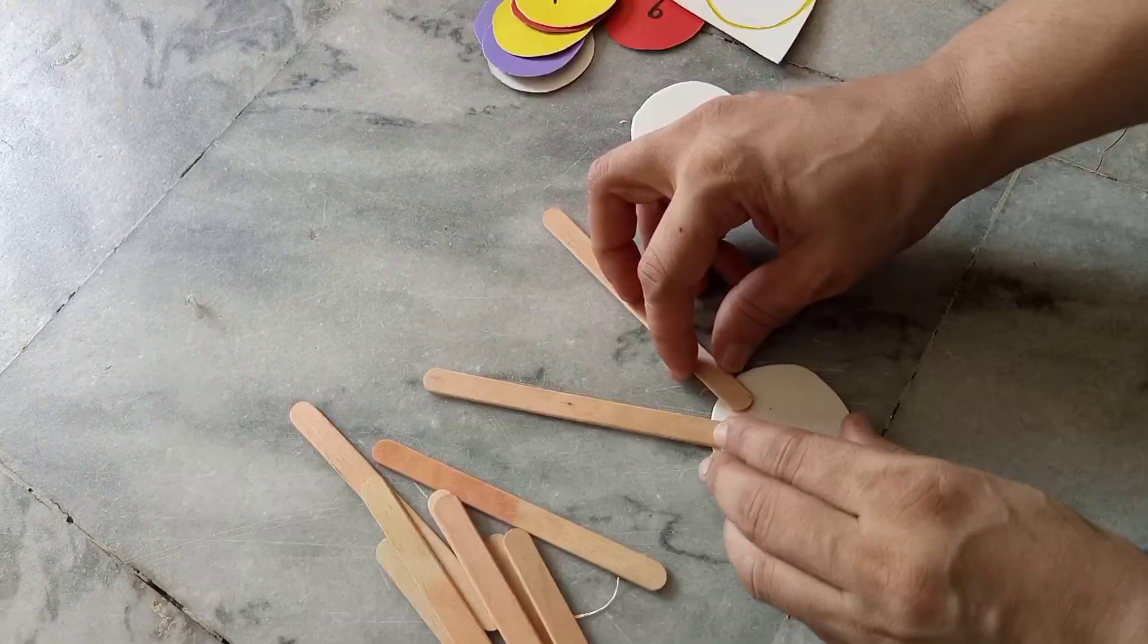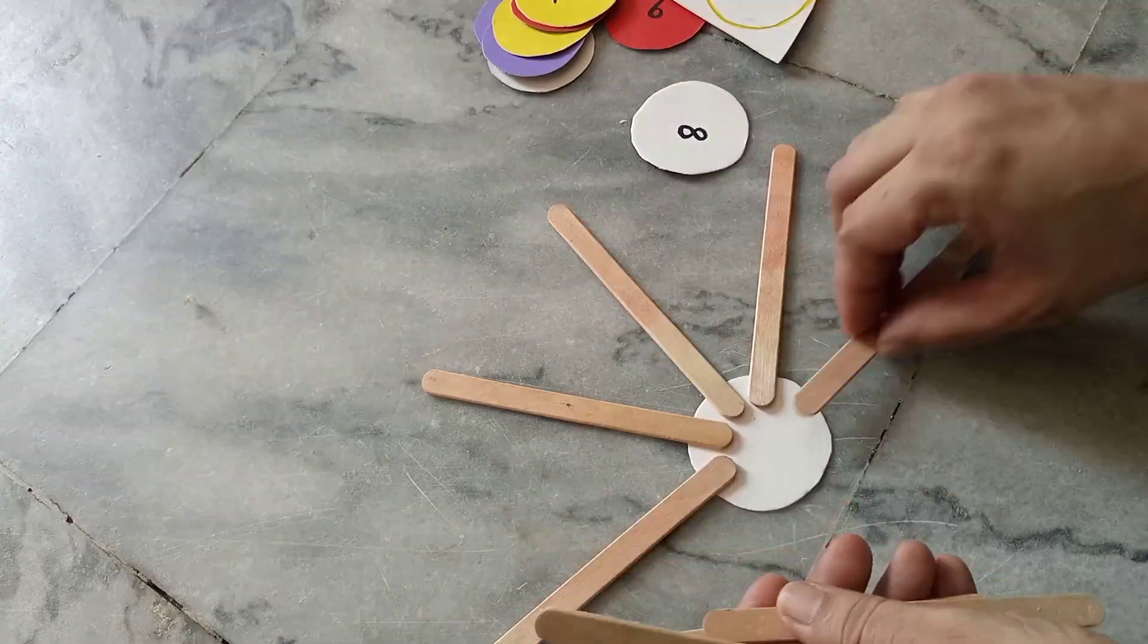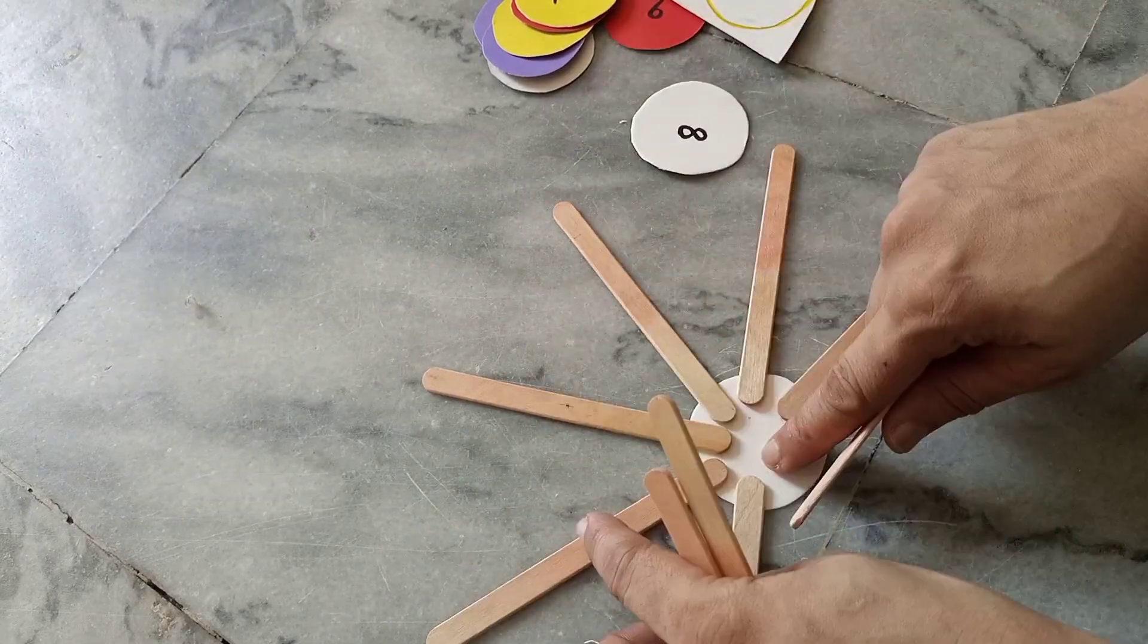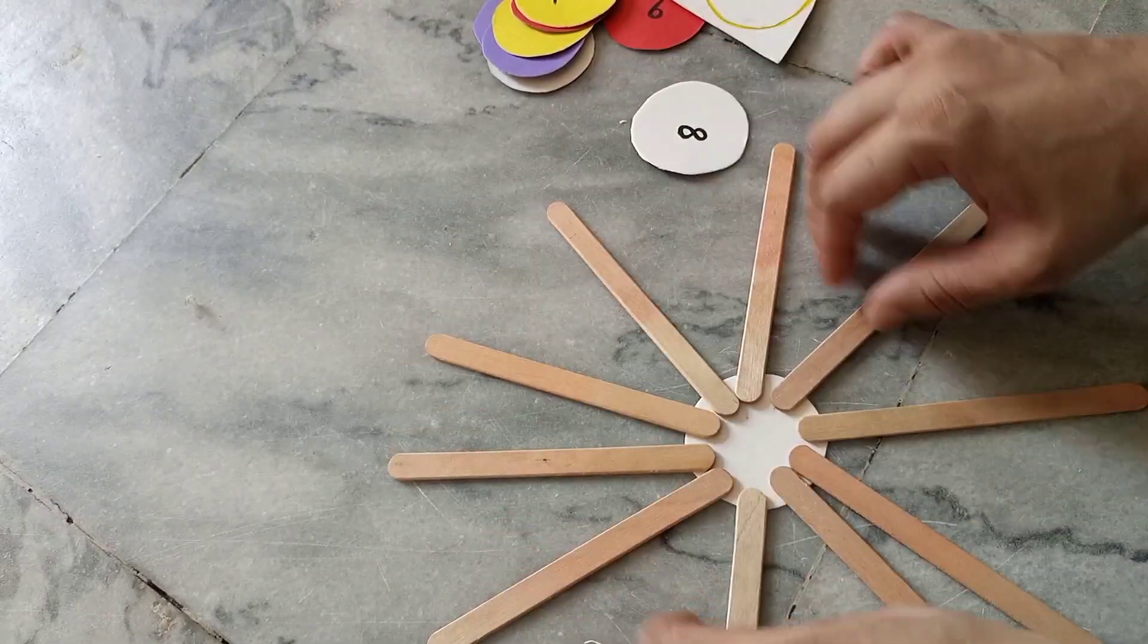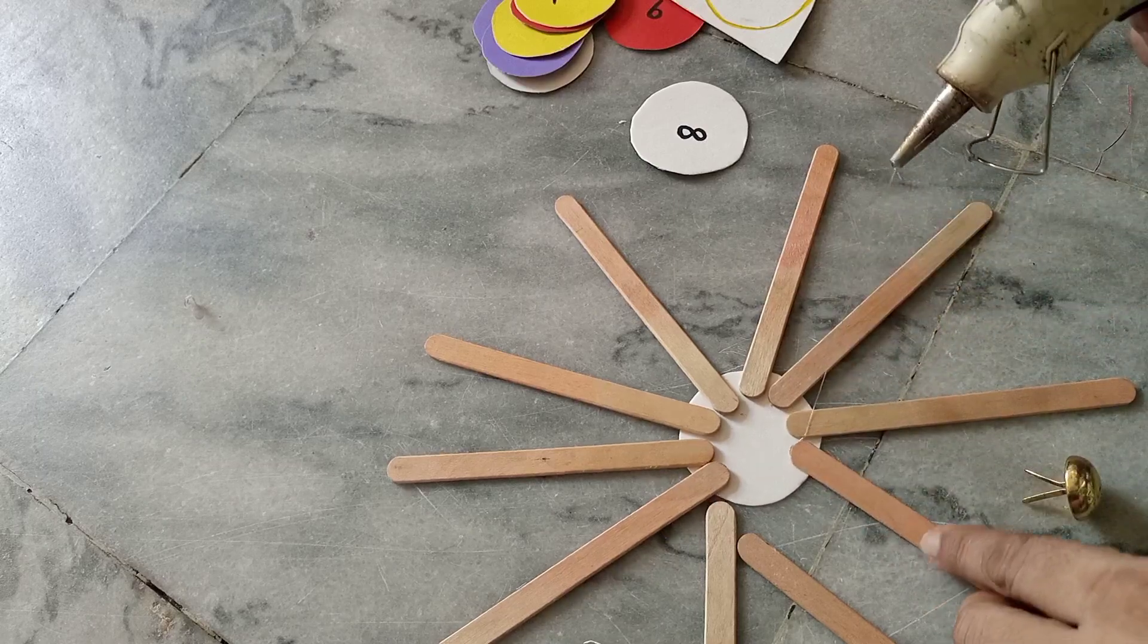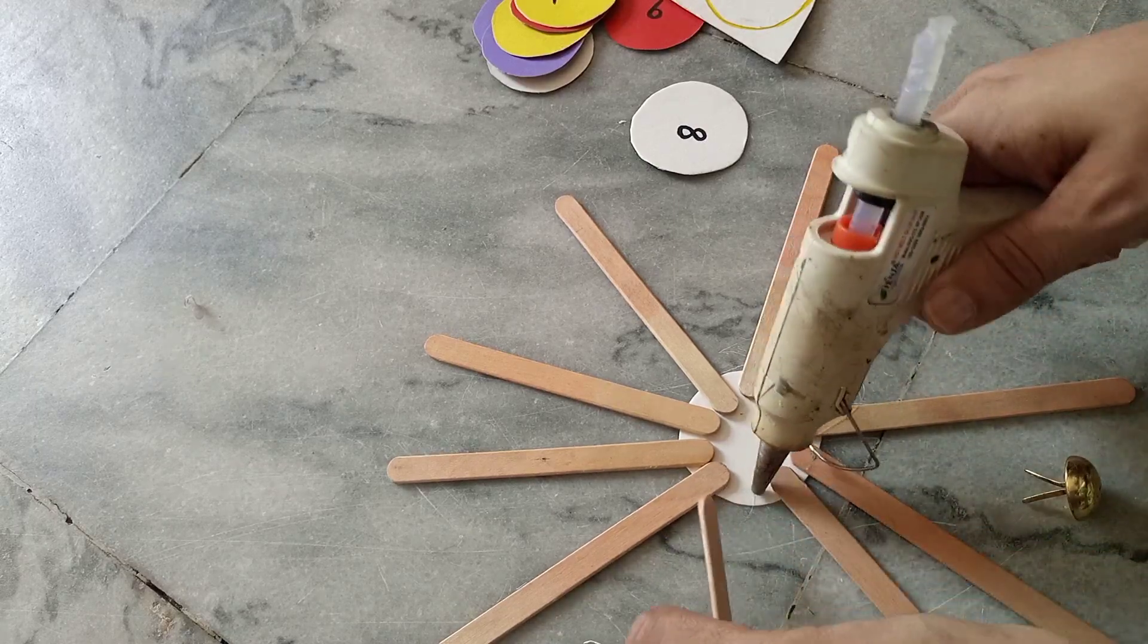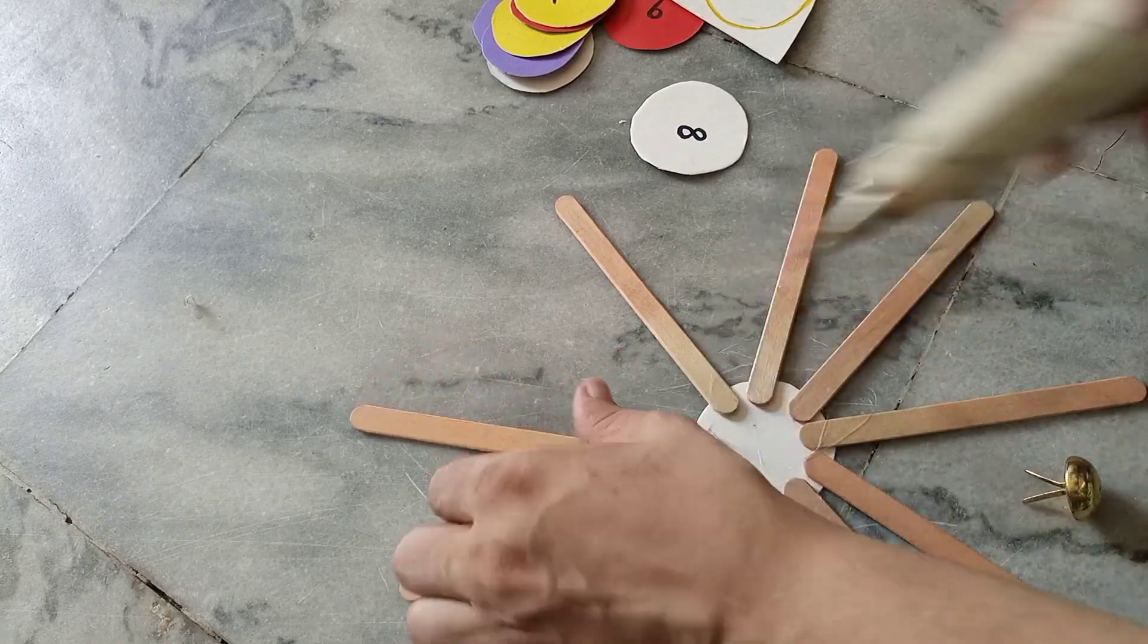Let's decorate these circles in different colors. Now take ice cream sticks and paste them with the help of hot glue on the small circle of the cardboard. This is how you need to attach it with the help of hot glue and you will make a very nice ice cream stick circle.